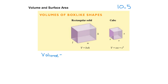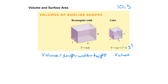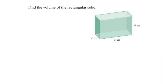The volume for a rectangular solid is length times width times the height. And then for a cube, it says S to the third power. On a cube, all sides are equal, so the volume of a cube is side times side times side — all sides are equal.